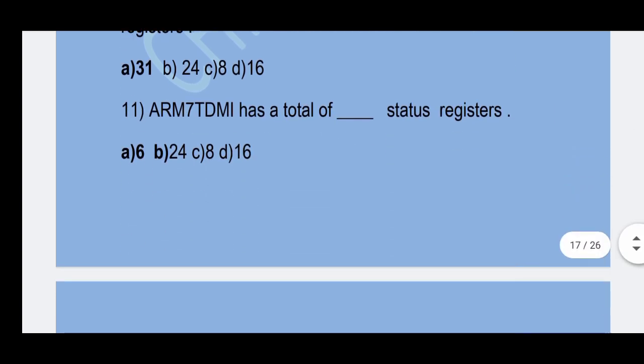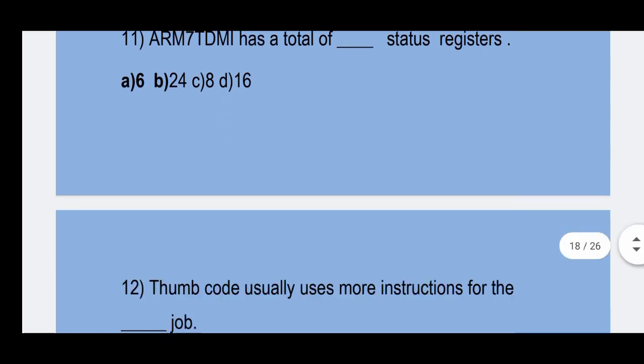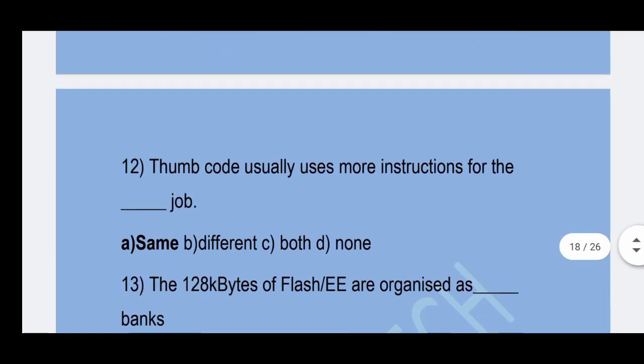11th question: The ARM7TDMI has a total of how many status registers? Option A — 6 is the correct answer.